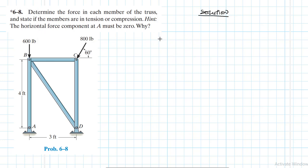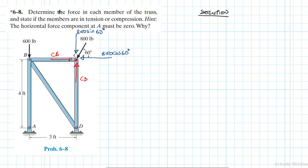Let's work on joint C. I'll assume member CD is in compression and member CB is also in compression. The 800-pound applied load has two components: 800 cos 60 in the horizontal direction and 800 sin 60 in the vertical direction.